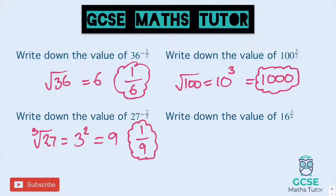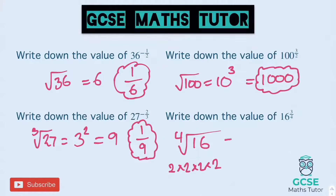Write down the value of 16 to the power of 3 quarters. We've got a 4 on the bottom, so a 4 on the bottom will be a 4th root. I need to know what number times itself 4 times makes 16. When it comes to 4th roots, these numbers are never going to get very large — by the time we get to 5 to the power of 4 we're at 625. So 16 is 2 times 2 times 2 times 2, so the 4th root of 16 is 2. There's a 3 on the top, so we need to do 2 cubed — 2 times 2 times 2 is 8. That's our final answer.